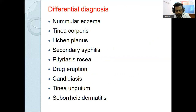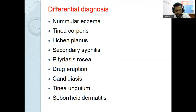Tinea corporis presents as annular hyperpigmented plaques with central clearing, peripheral scaling, and raised erythematous borders. Types of tinea (dermatophyte) infections by site: tinea capitis (scalp), tinea faciei (face), tinea barbae (beard/mustache), tinea corporis (body), tinea cruris (groin), tinea manuum (palms), tinea pedis (soles), and tinea unguium (nail plate).